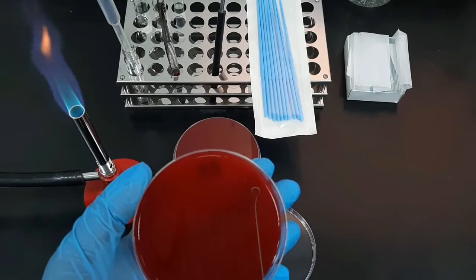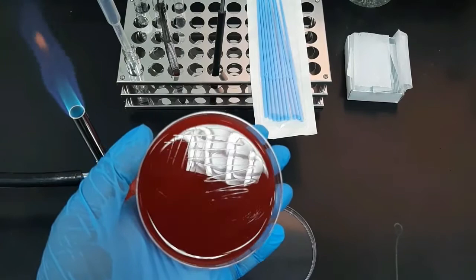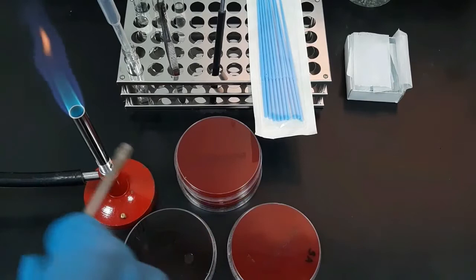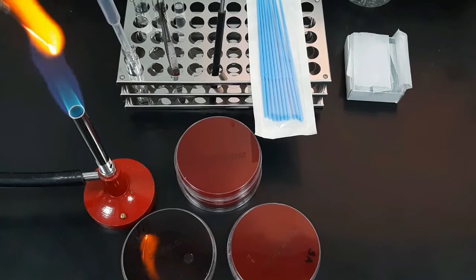Our goal in this method is to get single colonies in the final streaks. Intermittent flaming of the loop can be done during the streaking to reduce the load of the organisms so that there is a better chance of getting isolated colonies in the final streaks.